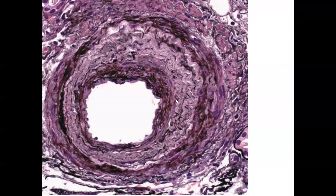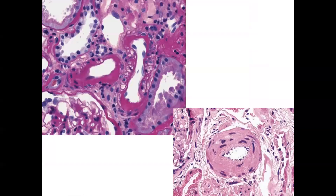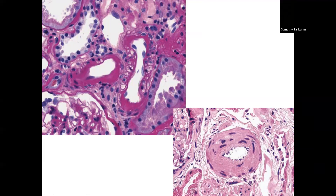Hyperplastic arteriosclerosis shows concentric intimal thickening and medial hypertrophy. Hyaline arteriosclerosis is another manifestation of longstanding hypertension — homogeneous hyaline material deposited concentrically in the intimal layer of arterioles. In normal arterioles there are only two layers of tunica media, but in longstanding hypertension there are more than two layers — three to four — indicating medial hypertrophy. Hyperplastic arteriosclerosis, hyaline arteriosclerosis, and medial hypertrophy are the findings seen in longstanding hypertension.